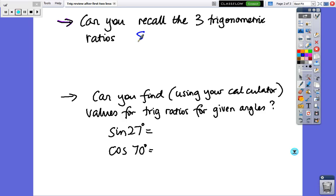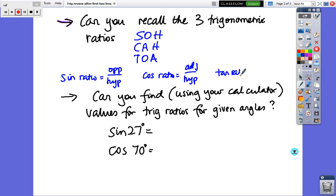Ok, so the three ratios, the little acronym that you have been shown, SOHCAHTOA. The sine ratio is the opposite divided by the hypotenuse. The cosine ratio is the adjacent over the hypotenuse, and the tan ratio is the opposite over the adjacent. So you've got to know that before you can go on.